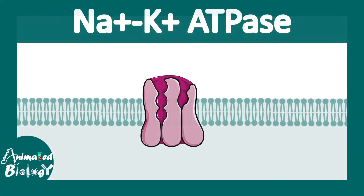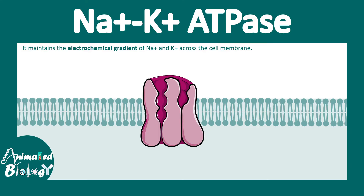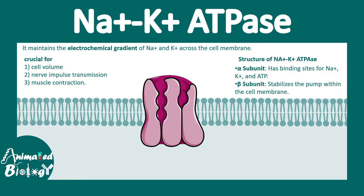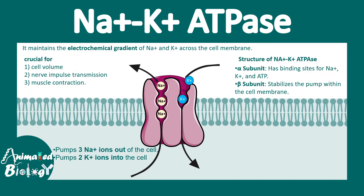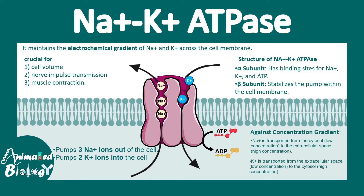P-type ATPase includes the sodium-potassium ATPase, which maintains the electrochemical gradient of sodium and potassium across the membrane. This is crucial for cell volume regulation, neuronal resting membrane potential, and muscle contraction. It has two major domains: the alpha domain, which has the sodium, potassium, and ATP binding sites, and the beta domain in the transmembrane region. Three sodium ions are released to the outside, while two potassium ions are released to the cytoplasmic side.